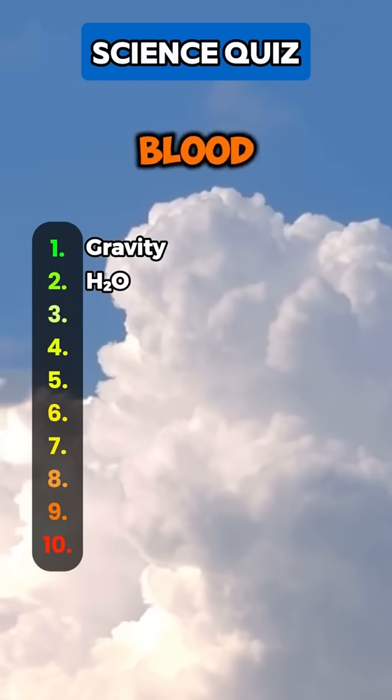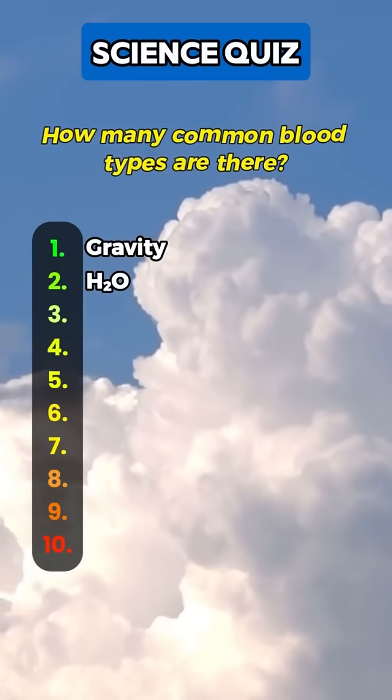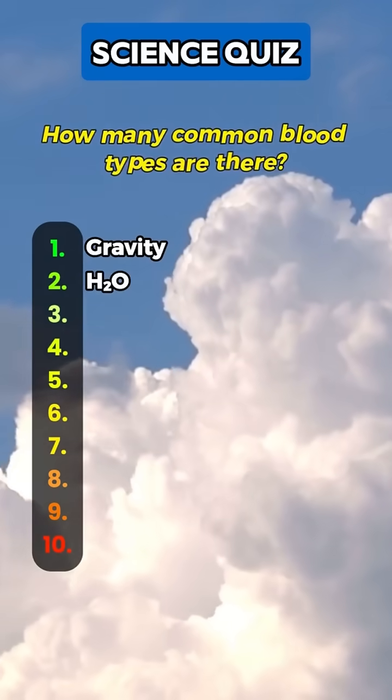Third one, how many common blood types are there? Eight.